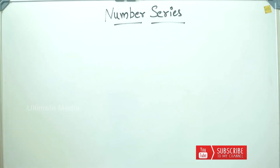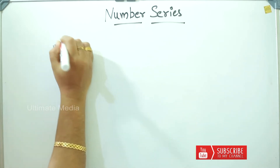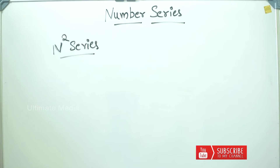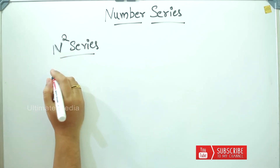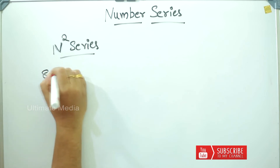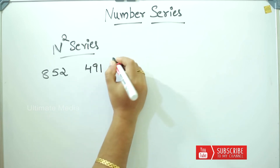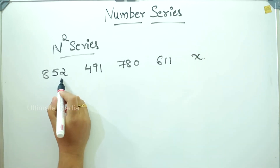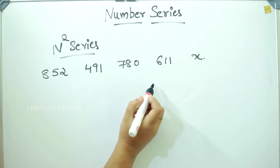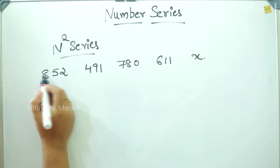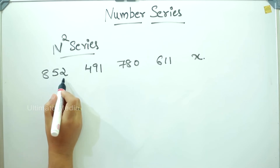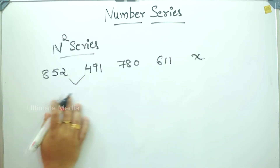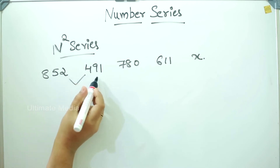This is the squares — n squared series. I will do one question. Looking at the series: 10, 17, 26, 37, 50, x. We need to find the pattern.